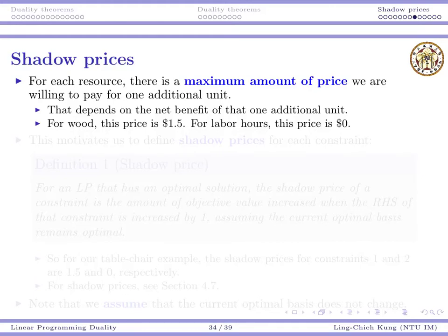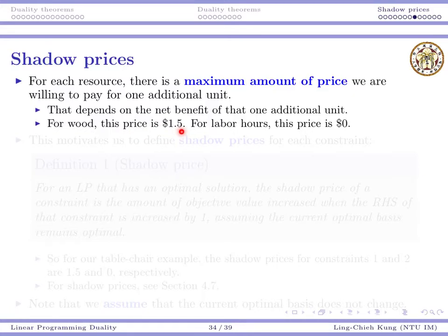For each resource there is a maximum amount of price we are willing to pay for one additional unit, and that amount depends on the net benefit that one additional unit may give us. For example, for wood this price is 1.5, because if there is one additional unit of wood for free, we may earn 1.5 dollars more. For labor hours, this price is zero, because no matter how many more labor hours we get, we will earn nothing more — the current bottleneck is the wood.